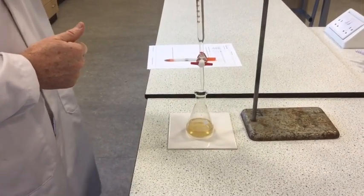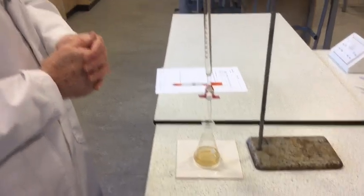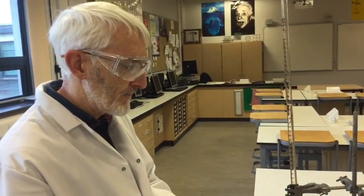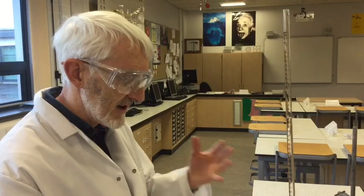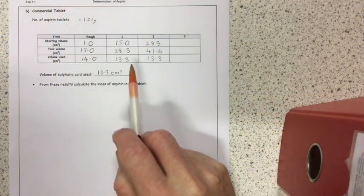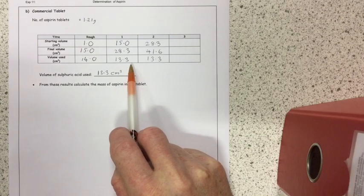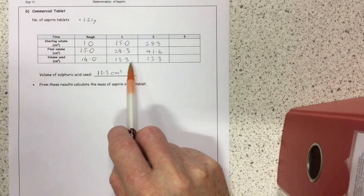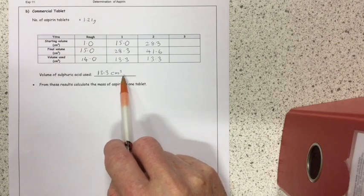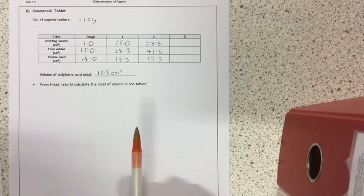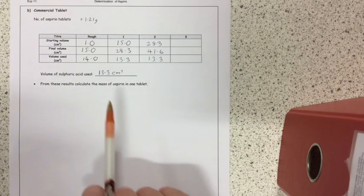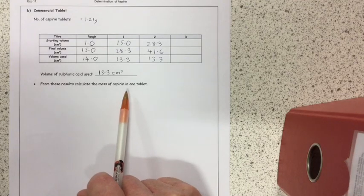I now repeat that two, three, four times until I get concordant results doing accurate titrations, so that's two readings within 0.1 cubic centimeter of each other. My first two accurate titrations both gave me a volume of 13.3, so that will be the volume of sulfuric acid that I'll use in the calculation to determine the mass of aspirin in one tablet.